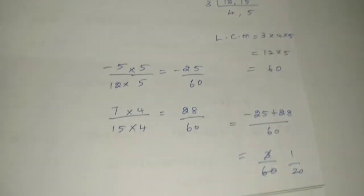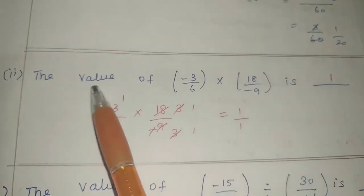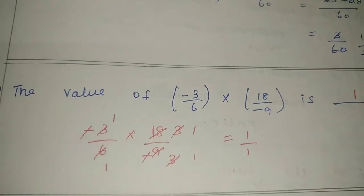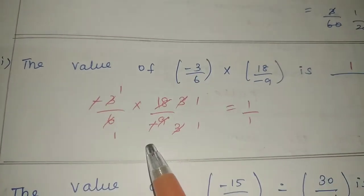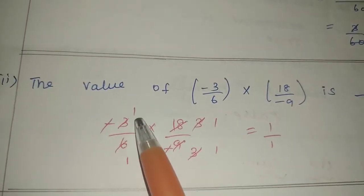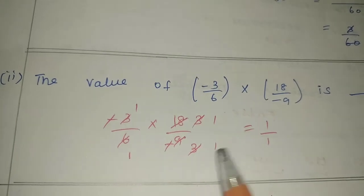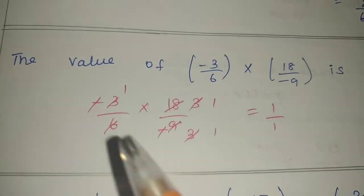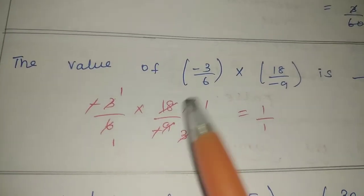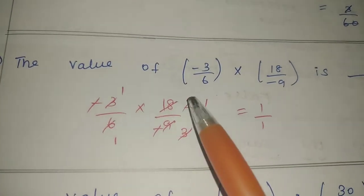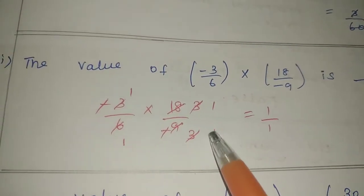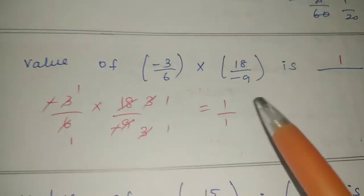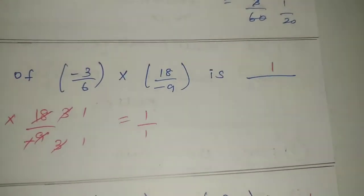Clear. Second part: the value of minus 3 by 6 into 8 by minus 9 is dash. The three-times table cancels. This minus and minus cancel. 6 table 1 time and 3 times cancel. 3 table 1 time. So 1 ones are 1, 1 divided by 1 is 1. Clear?